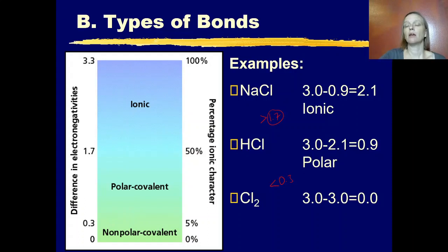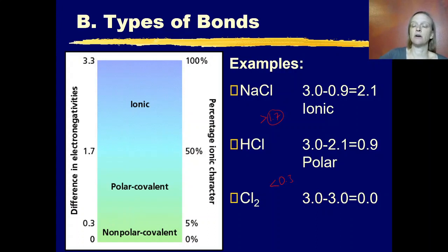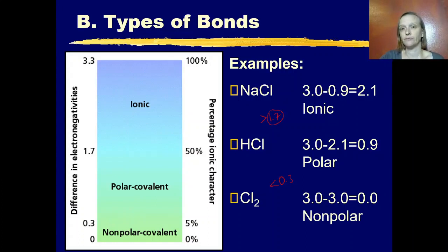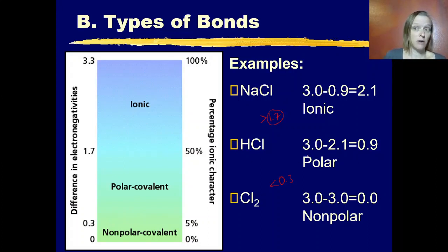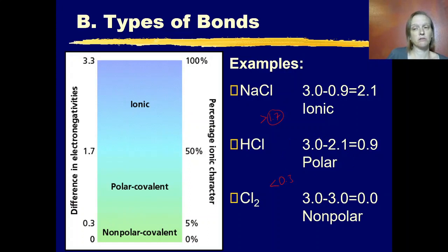Lastly, chlorine gas: the electronegativity value for chlorine is 3.0, and 3 minus 3 is 0. There is no difference in electronegativity, so this is a nonpolar covalent molecule. So we have ionic compounds and covalent compounds — some purely covalent, and some more lopsided with their electrons that we call polar covalent.